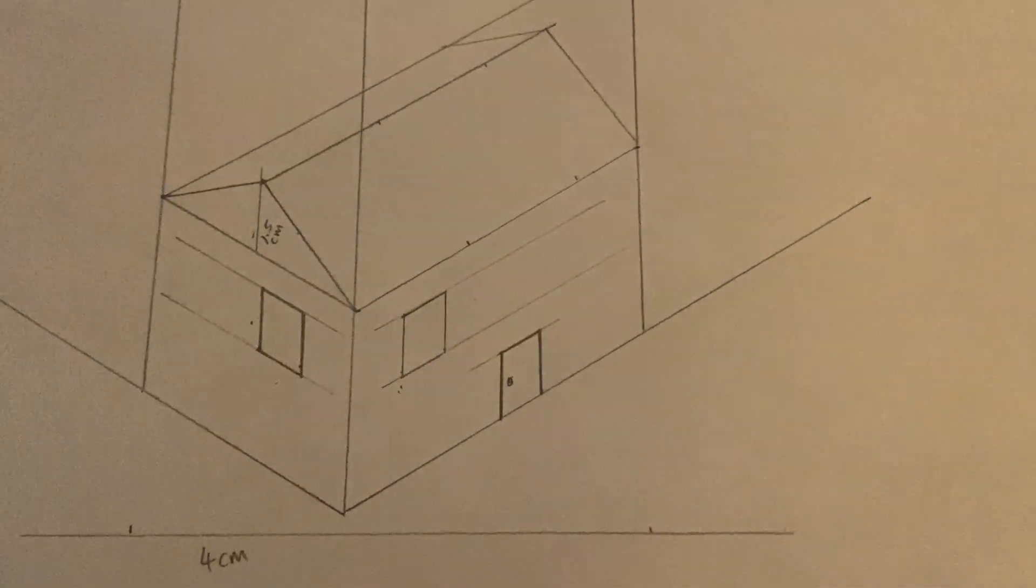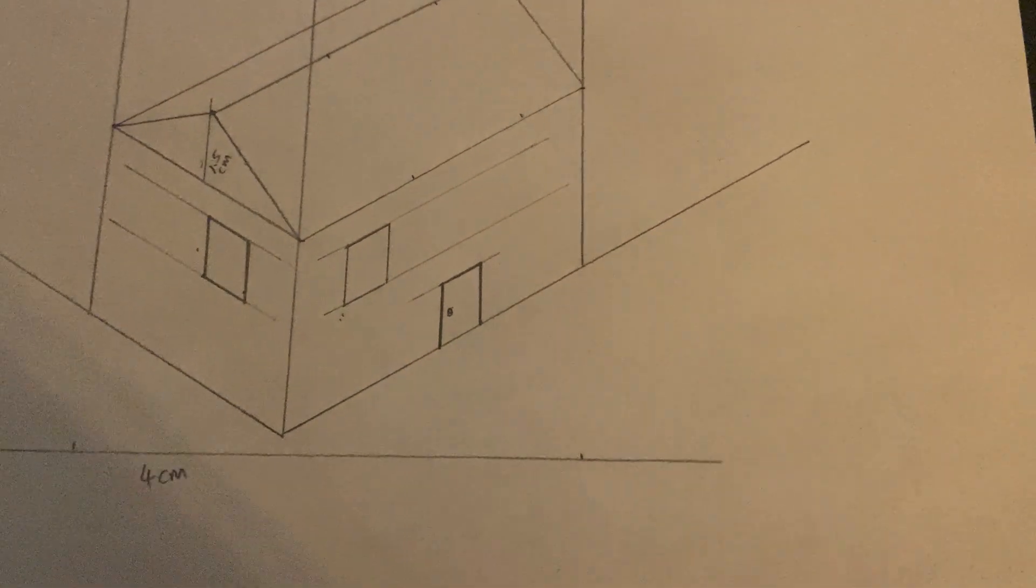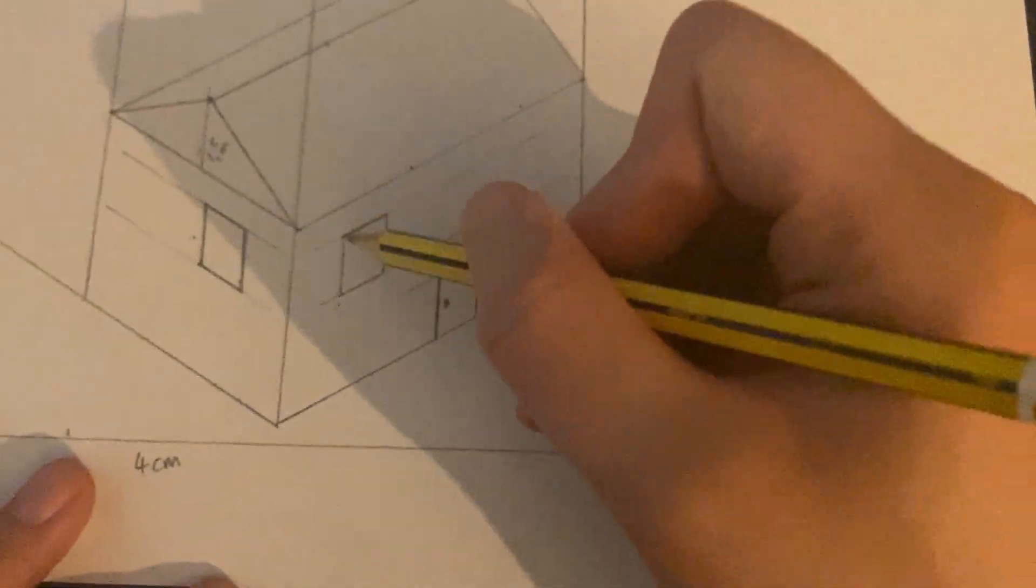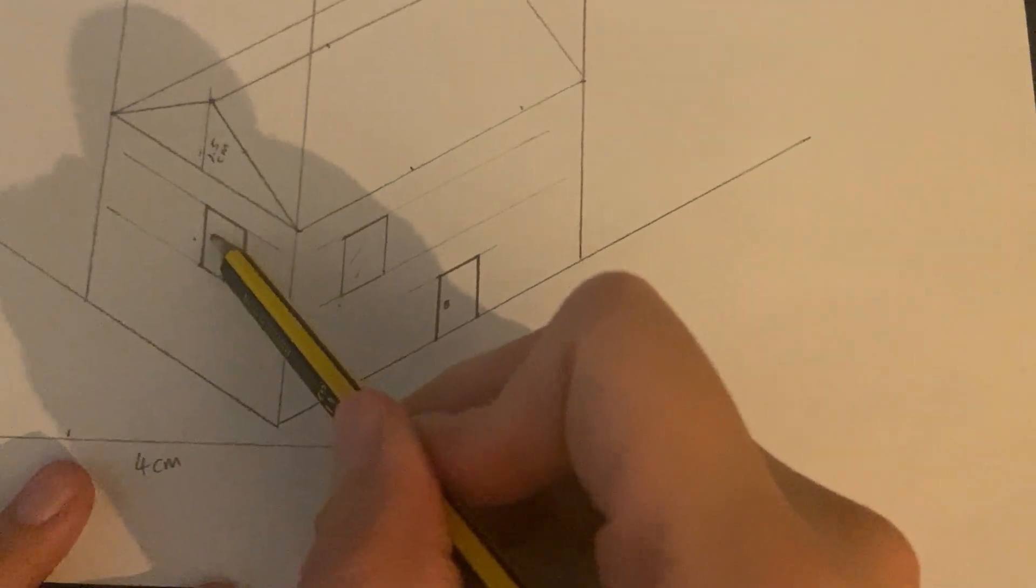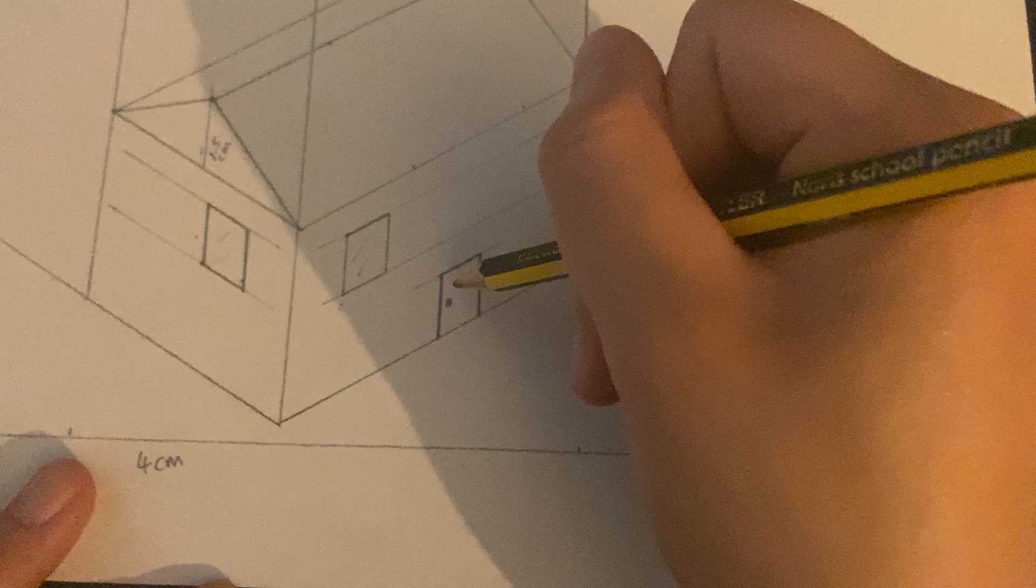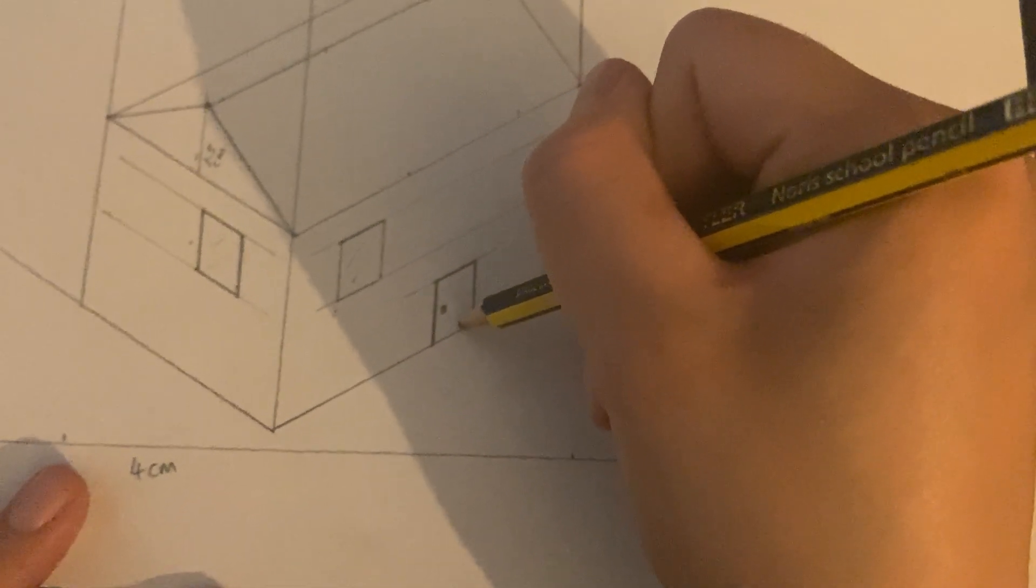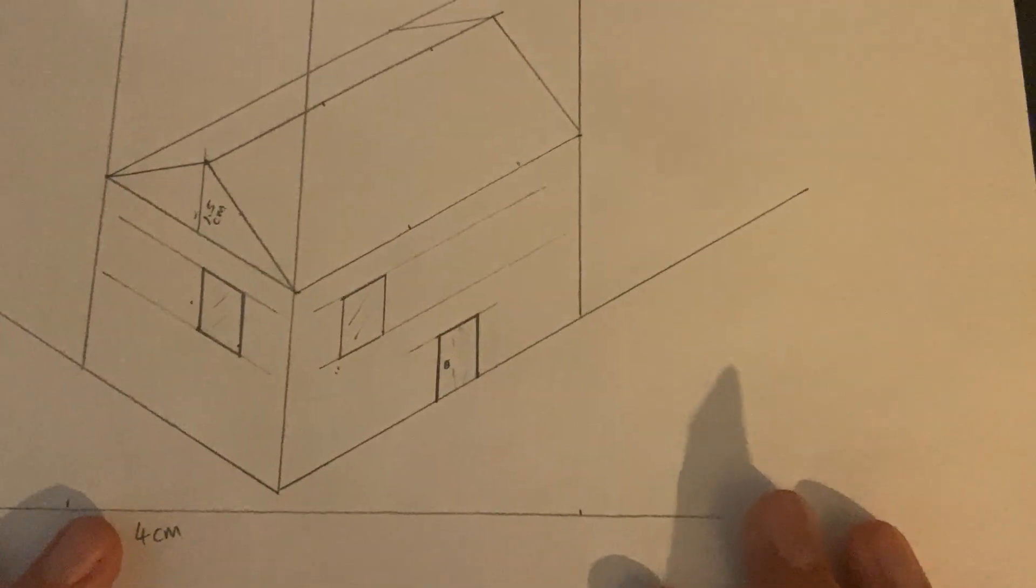And eventually you might have something that looks like this, so two windows. If you like, you can even design your own window if you want, but this is just something to get the basics in there. And then you can make little dash marks to show the lines in there and some details. And that's it guys.